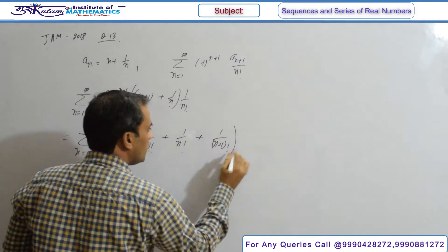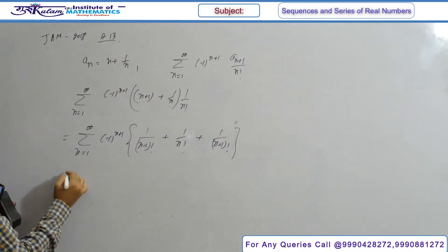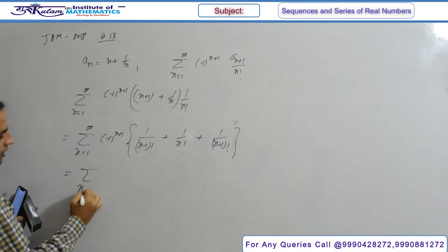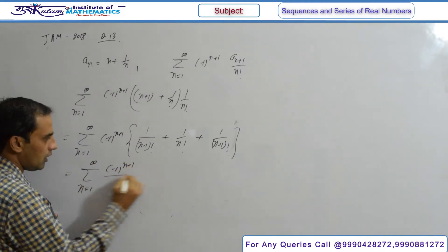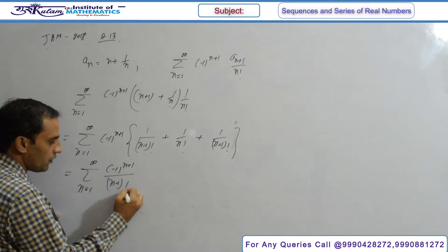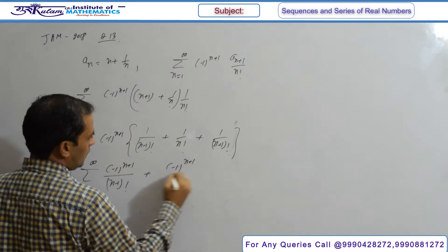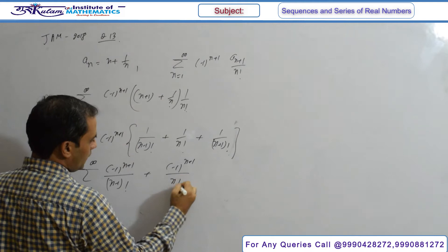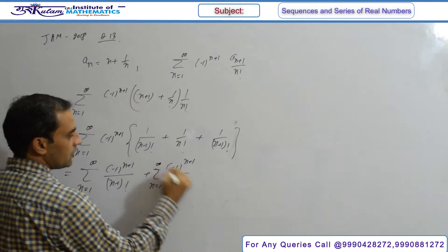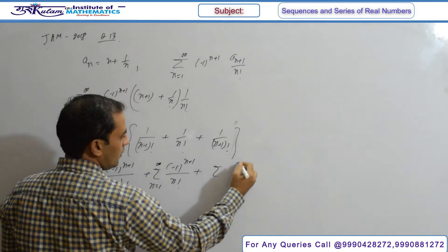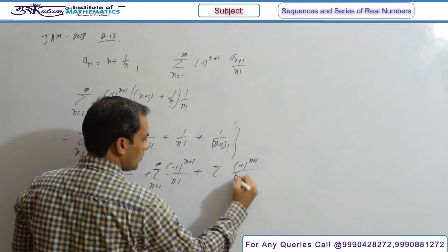Now simplify and split into three separate summations. First: summation of (-1)^(n+1) / (n-1) factorial. Second: summation of (-1)^(n+1) / n factorial. Third: summation of (-1)^(n+1) / (n+1) factorial. All summations run from n=1 to infinity.